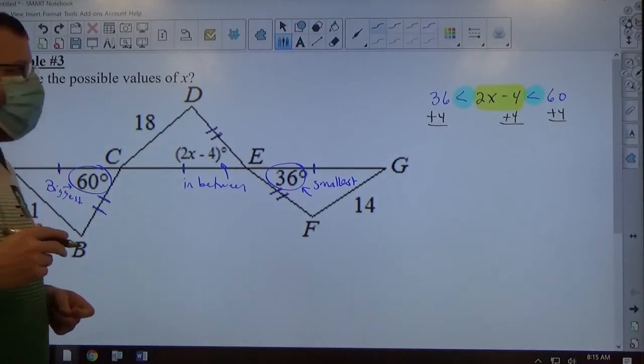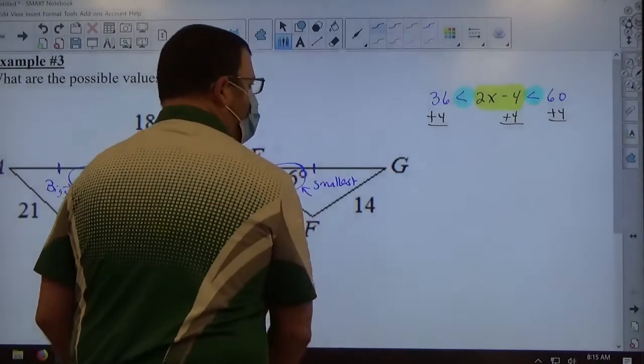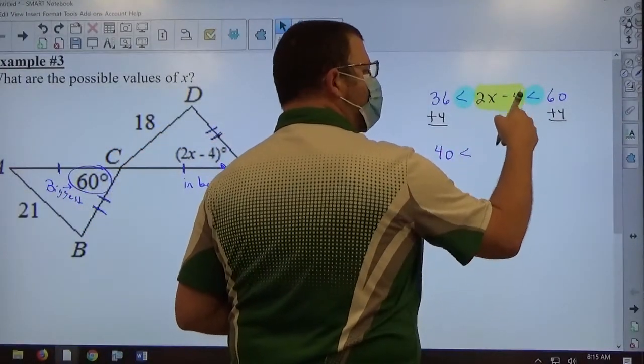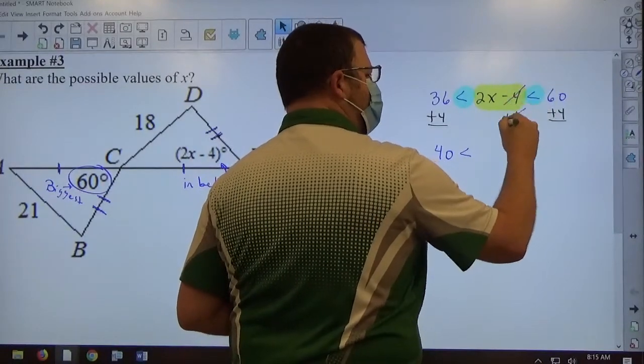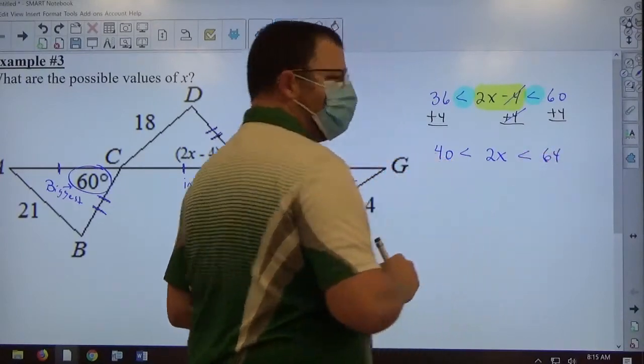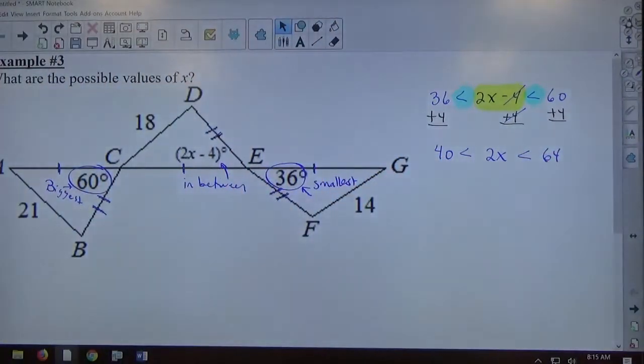If I carry out the math here, 36 plus 4 on the left is equal to 40. 2x minus 4 plus 4. Minus 4 and plus 4 make 0, so we get 2x. And 60 plus 4 is 64. So always get rid of the plus or minus issue first.